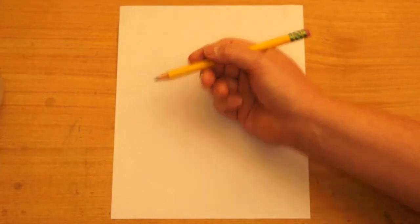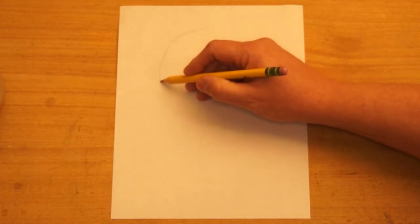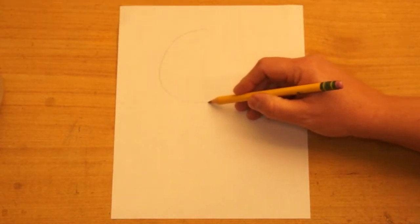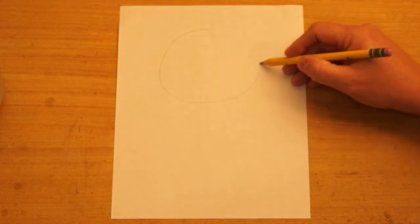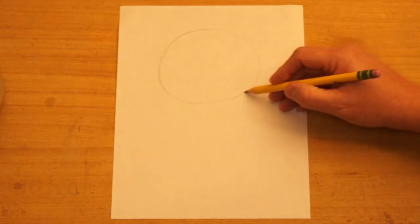I have my paper turned vertical, and I'm using a regular pencil to draw. I'm going to start on the top half of the paper and make a big circle. Now you want to start off drawing lightly because we're going to change a few things as we go. It's a lot easier to erase if you started light.